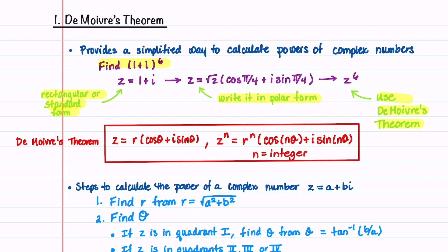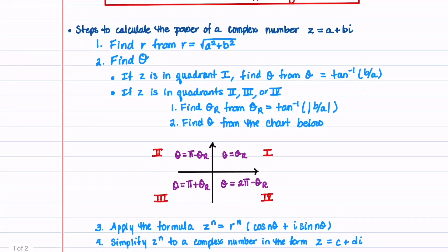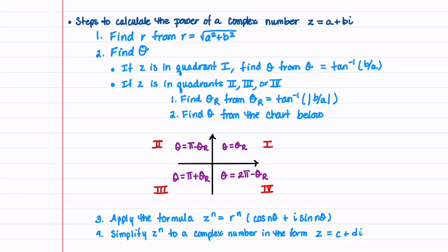This theorem provides us with an easy-to-follow formula. It's assumed that n is equal to an integer. Let's go over the steps to calculate the power of a complex number z equals a plus bi.